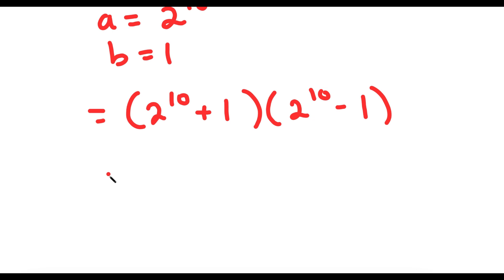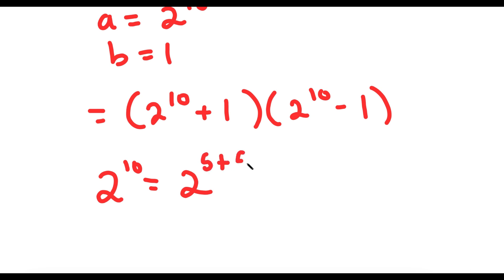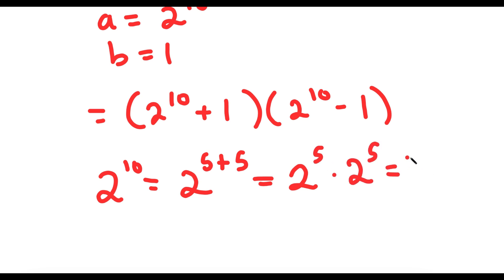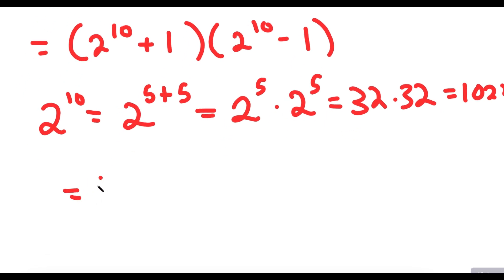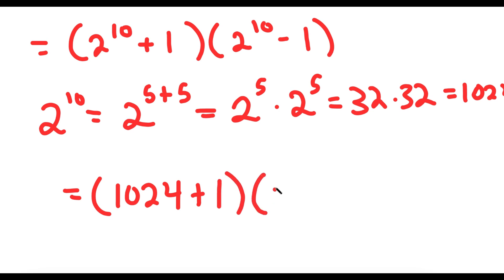Now, 2 to the power of 10 equals 2 to the power of 5 plus 5, which equals 2 to the power of 5 times 2 to the power of 5, which equals 32 times 32. And 32 times 32 is 1,024.